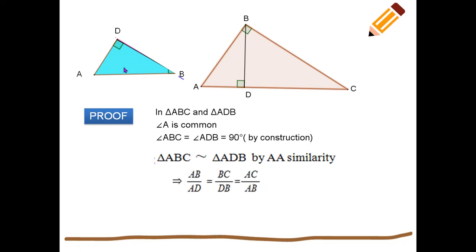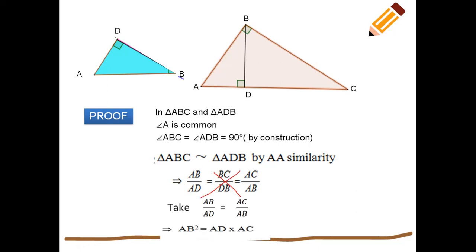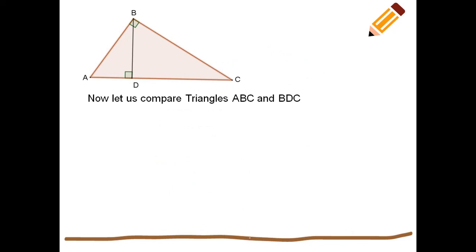In two similar triangles the sides are in the same ratio. Comparing: AB/AD = BC/DB = AC/AB. We need AB², so we take AB/AD = AC/AB, avoiding the middle ratio. By cross multiplication: AB² = AD × AC. This is equation number one.